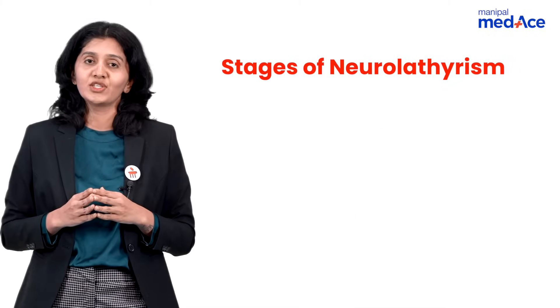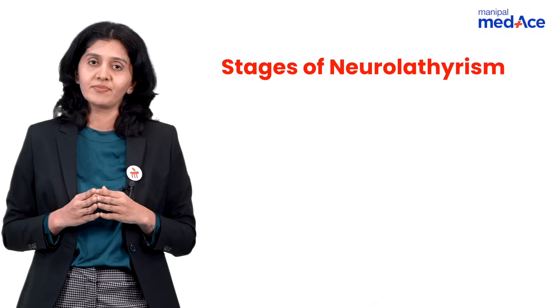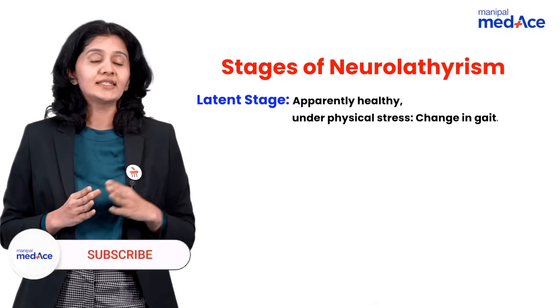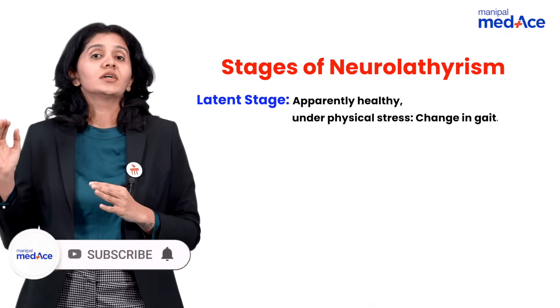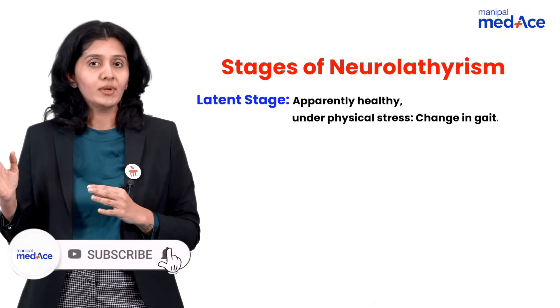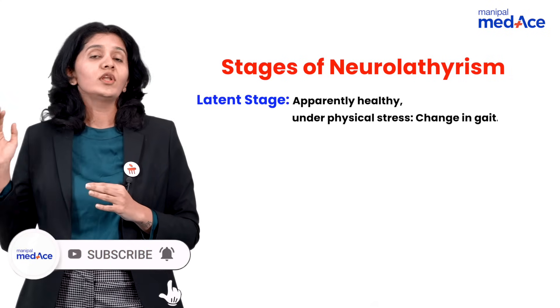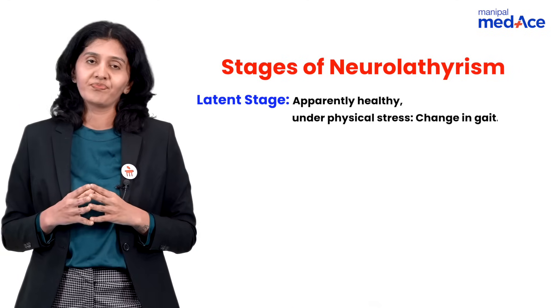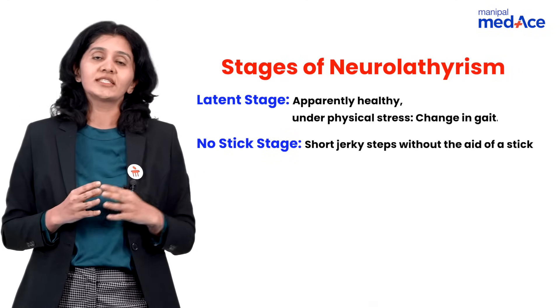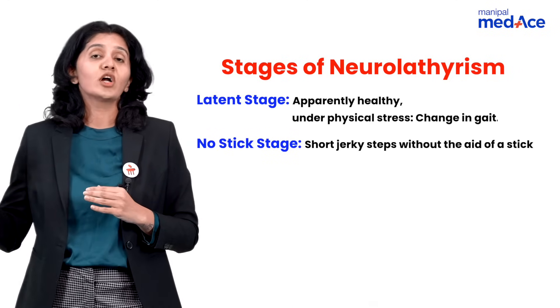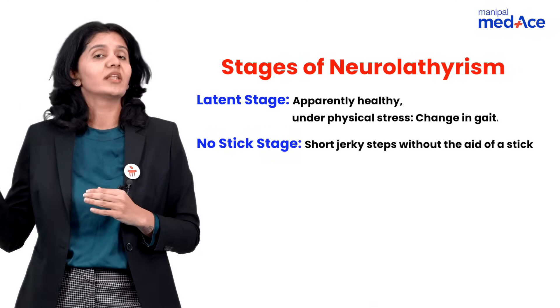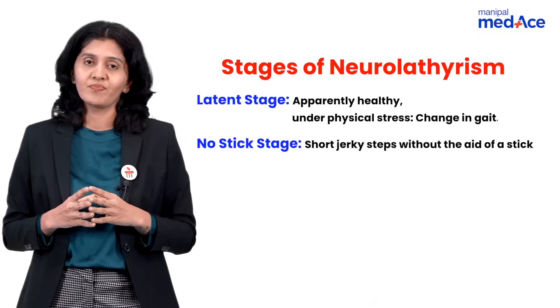What are the different stages of neuro-lathyrism? The first is the latent stage, where the patient is apparently normal — only under physical stress is there a change in gait. The second is the no-stick stage, where the patient takes short, jerky steps but no sticks are used.